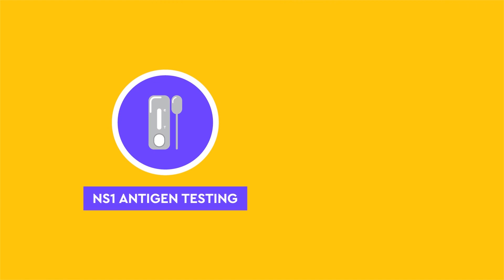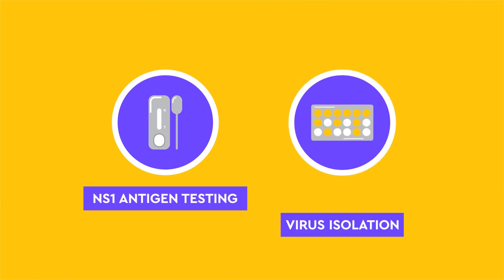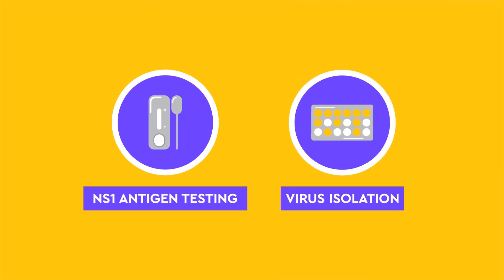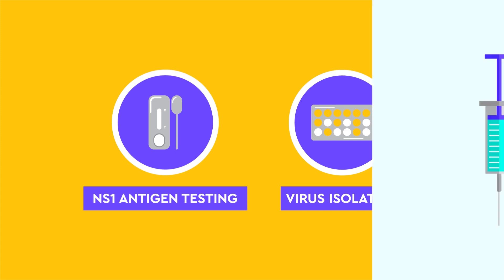NS1 antigen testing or virus isolation can be done in the early stages of fever to support the clinical diagnosis. Antibodies specific to dengue can be identified after the initial phase of the disease. There is no effective cure for dengue, but supportive care is essential to prevent death from complications.